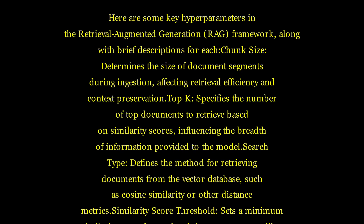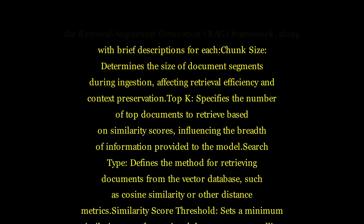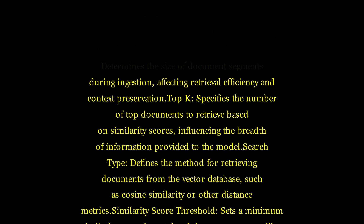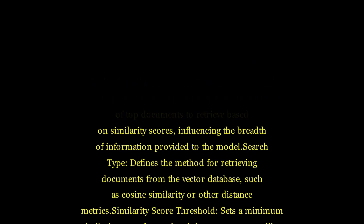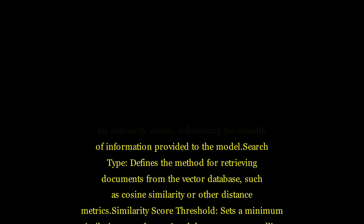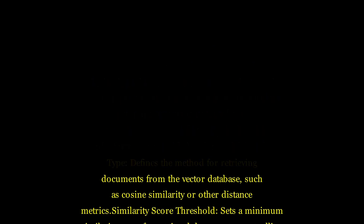There are three major types of chain: Map-Reduce chaining processes each document individually, summarizing them before merging summaries for the language model, making it suitable for large datasets. Refine chaining iteratively enhances the summary by refining it with each document, balancing detail and efficiency. Stuff chaining directly feeds all retrieved text to the language model for response generation based on the prompt and context.